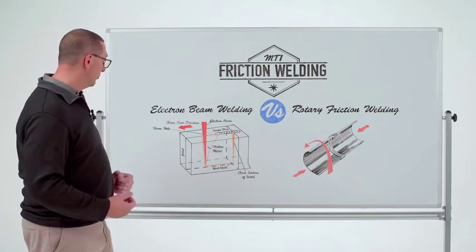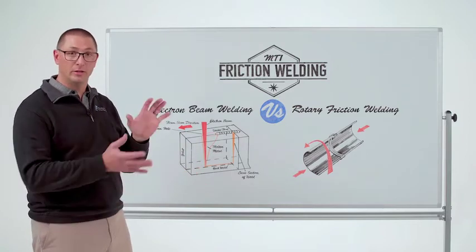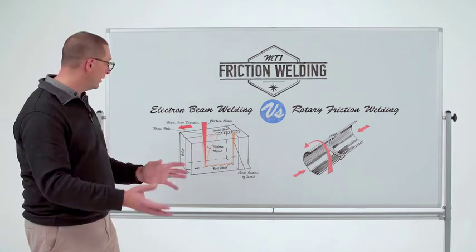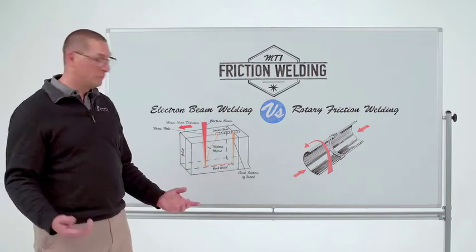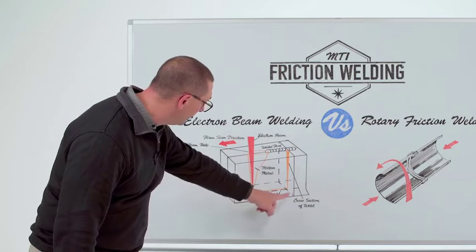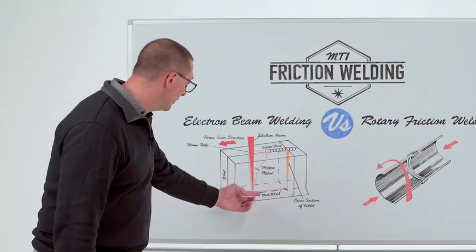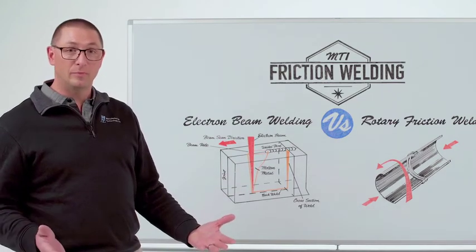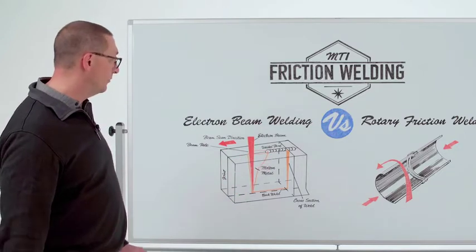EB welding is done in a controlled environment. The nice thing is there's no post-weld machining — you're going to do all of your machining pre-weld, then put it in this controlled environment and make the weld. You will have to do some post-weld inspection, because if the beam doesn't impinge far enough, you could have a defect at the backside of the weld, or if it goes too far, it can also leave a defect. You can repair an EB weld, but it decreases the life of the component.